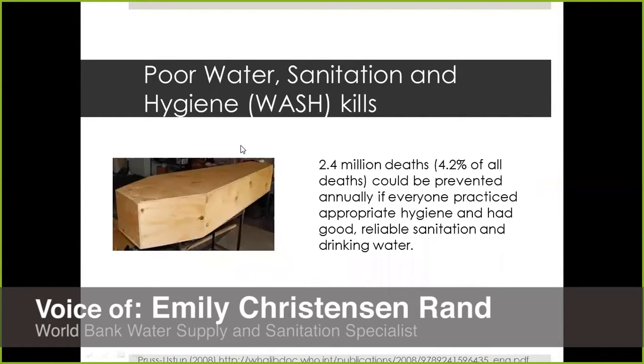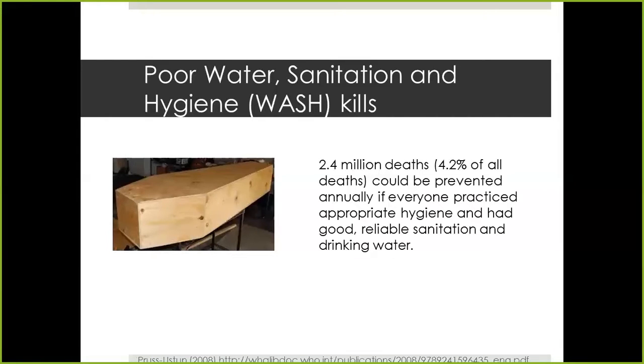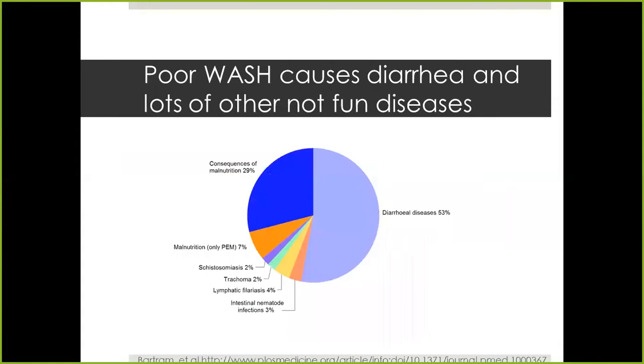One of the big reasons why these poor water and sanitation statistics matter is that poor water, sanitation, and hygiene kills. There are 2.4 million deaths each year that could be prevented if everyone practiced appropriate hygiene and had good reliable sanitation and drinking water.